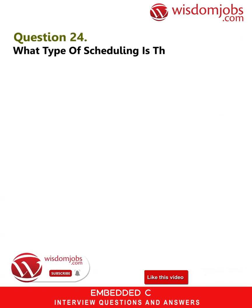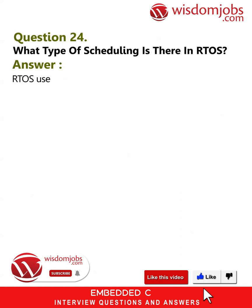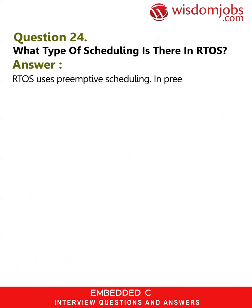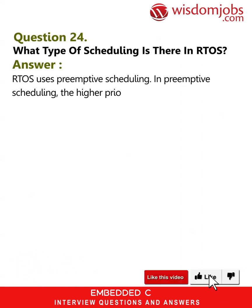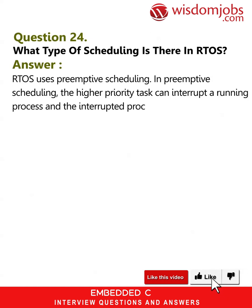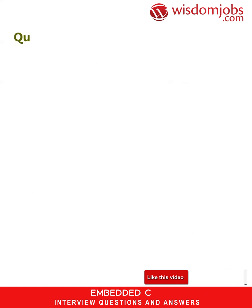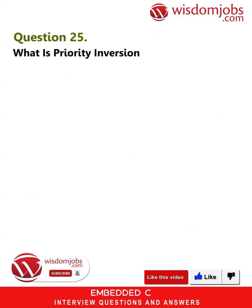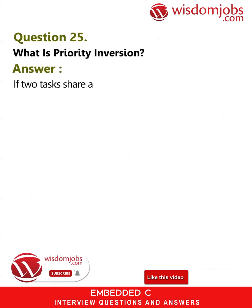Question 24: What type of scheduling is used in RTOS? Answer: RTOS uses preemptive scheduling. In preemptive scheduling, a higher priority task can interrupt a running process, and the interrupted process will be resumed later.